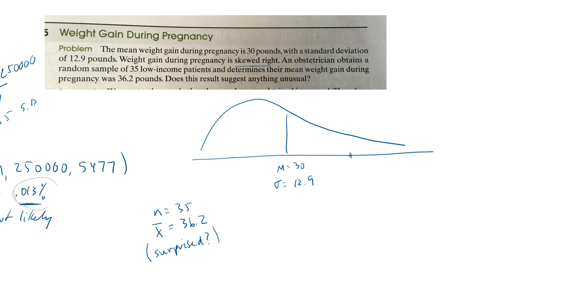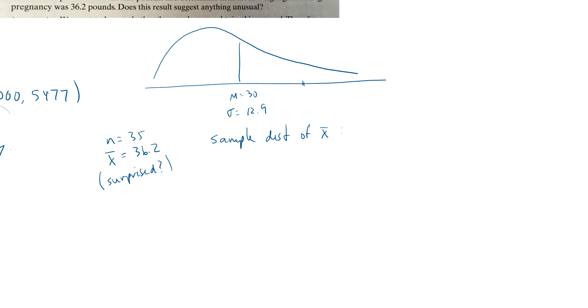Well, 36.2 is over here. But it's not an individual of 36.2. It's an average of 35 that are 36.2. So that means some are above and some are below. So let's look at what we call the sample distribution of X bar. And this is for 35 people. So what's the average going to be? The average of my samples. Well, it's going to bounce around 30. And the standard deviation, 12.9 divided by the square root of 35. And this is normal by what we call the central limit theorem.